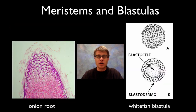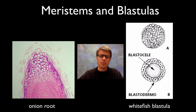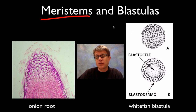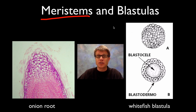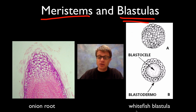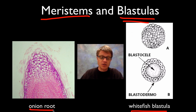Now let's start with mitosis. In this lab you could use either meristems — the indeterminate parts of a plant, almost like plant stem cells that haven't decided what they're going to become — or blastulas, which are balls of cells. We can use whitefish blastula, but I have more luck just using the onion root.